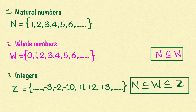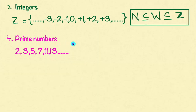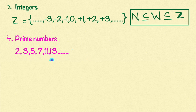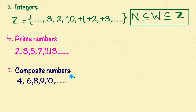Now we will learn about prime numbers and composite numbers. What are prime numbers? The numbers which are divisible by one and themselves are known as prime numbers. One is not a prime number. The prime numbers are 2, 3, 5, 7, 11, 13, and so on. In all these prime numbers, only one prime number is even — that is 2. Other than 2, whatever prime numbers are there, they are all odd. Composite numbers are the numbers which are not prime — 4, 6, 8, 9, 10, and so on are all composite numbers.